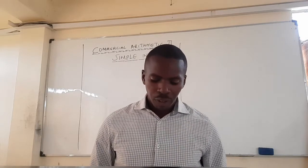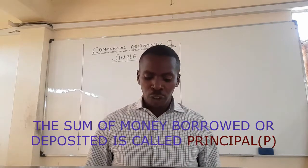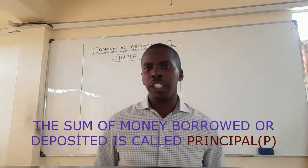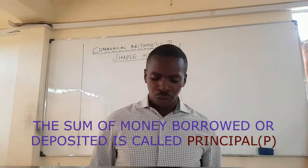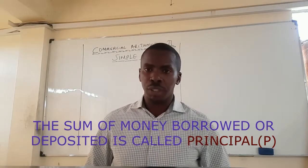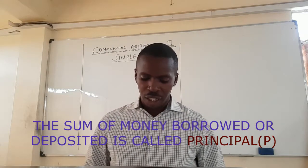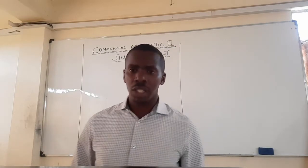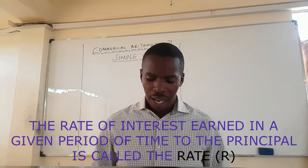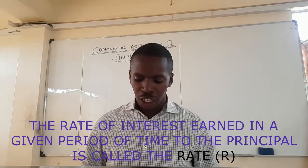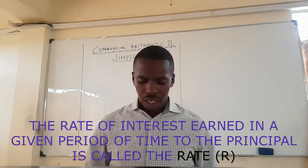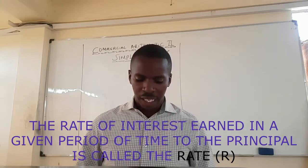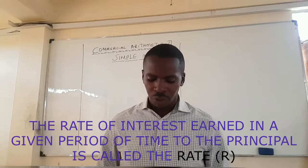For the scenario where you borrowed a loan, the amount of money that you borrowed or deposited in the bank is called the principal. Then we have the rate of interest earned in a given period of time on the principal, which is called the rate of interest, and we just write it as R.